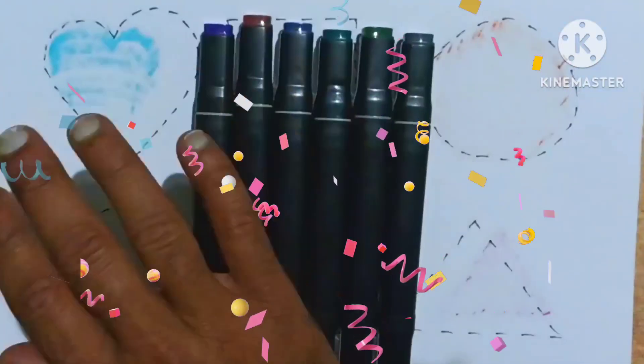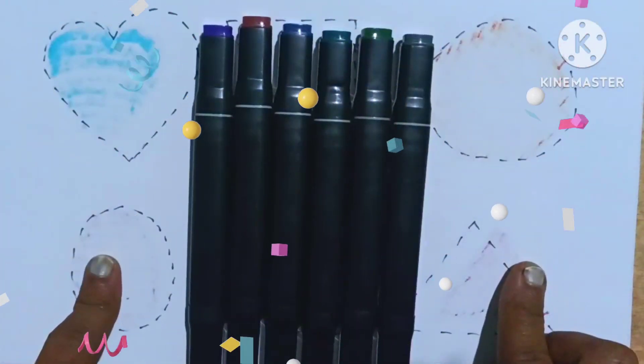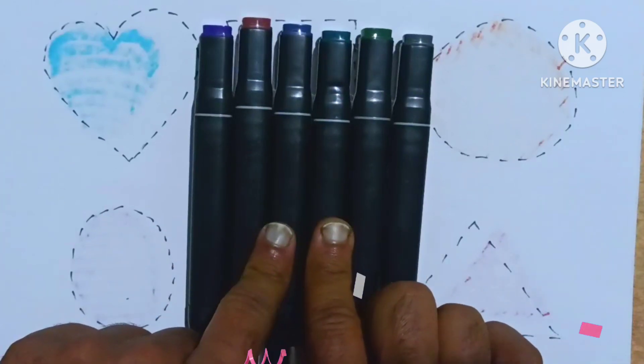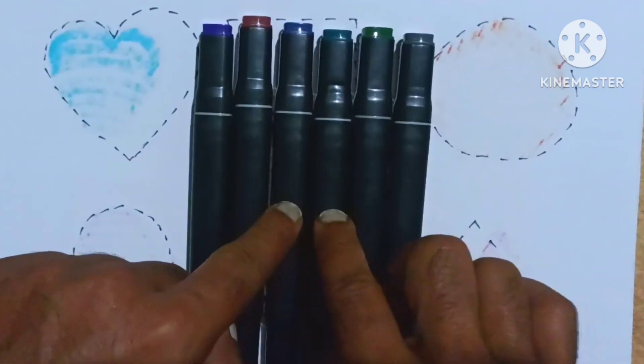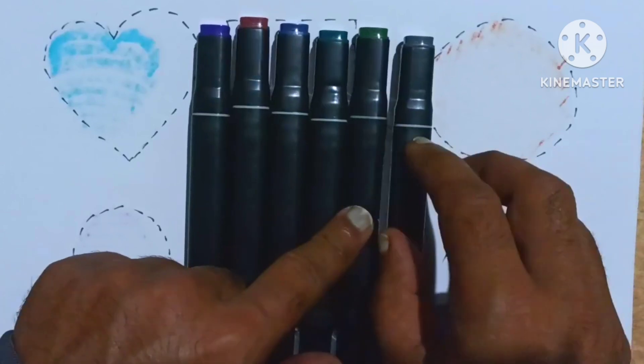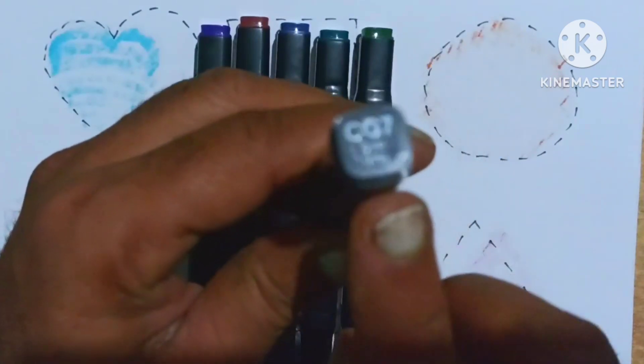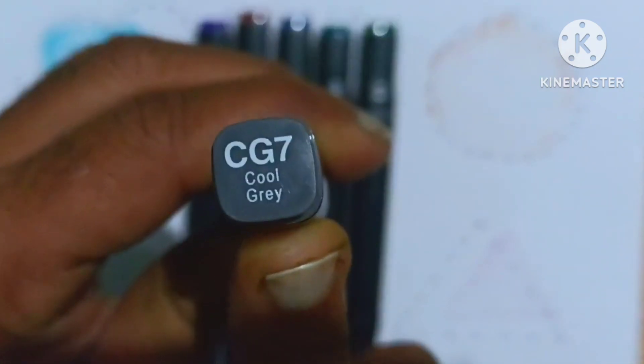Hello kids, today we draw some 2D shapes and learn some colors. So first we learn these colors. Let's start, look at this color kids. Which color? It's a cool grey color.